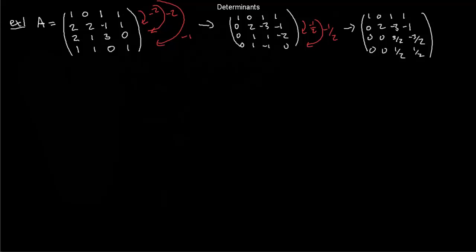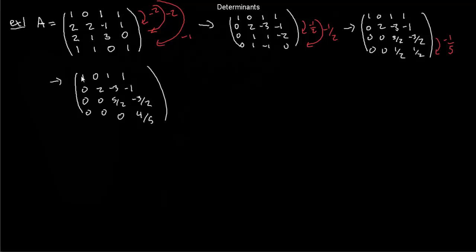We're almost done — just one more row operation: take minus 1/5 times the third row and add it to the fourth row. Notice we haven't done any row swaps — we started with a regular matrix. No row swaps means the determinant of A equals the determinant of the upper triangular matrix we end up with, because we only used row operations of type 1.